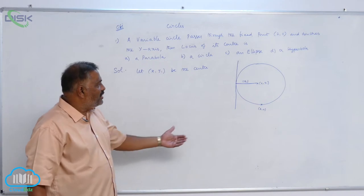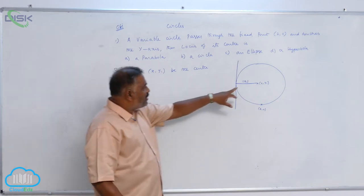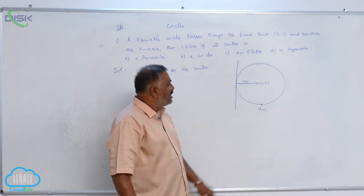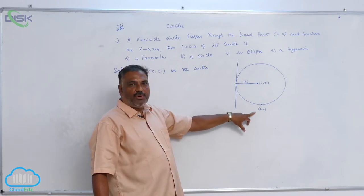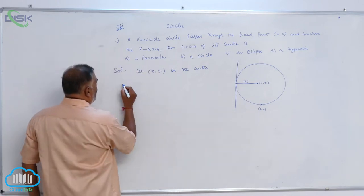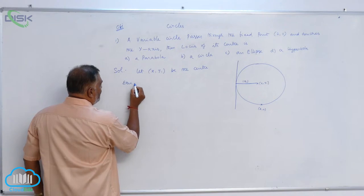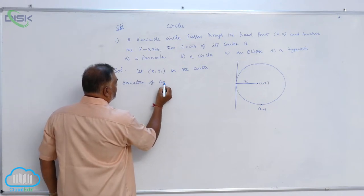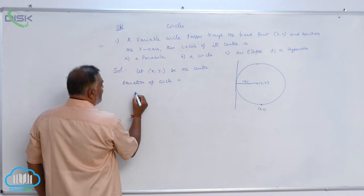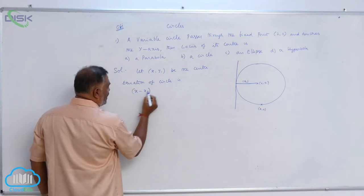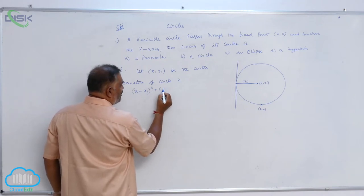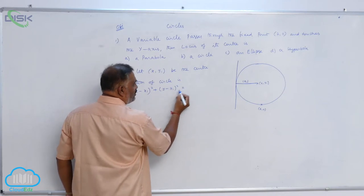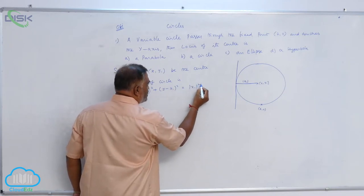So straight away you can observe the point. You have the radius, you know the center, and circle passes through (2, 0). So, equation of circle is (x - x1)² + (y - y1)² = (mod x1)².